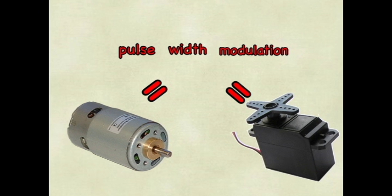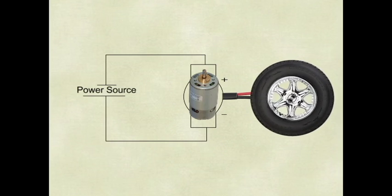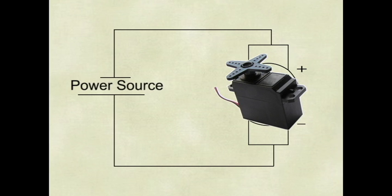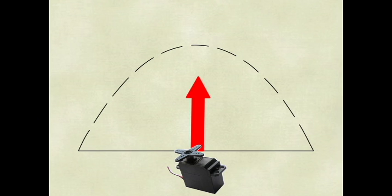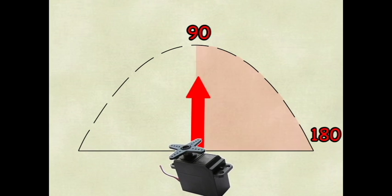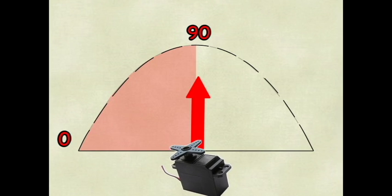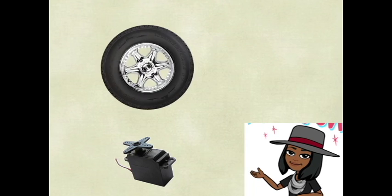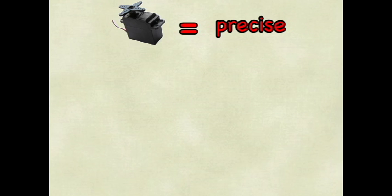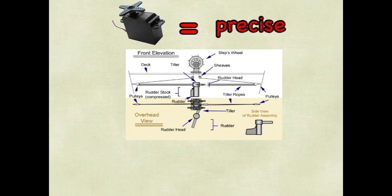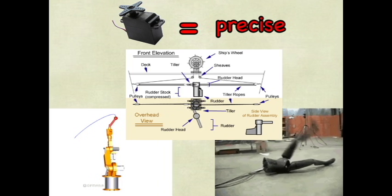Servos use the pulse width modulation technique too, but it's used differently. In a DC motor, pulse width modulation determines speed, but in a servo, pulse width modulation determines which way the shaft will rotate. For example, the center position for a servo is 90 degrees. A long pulse between 90 and 180 will make the servo turn clockwise. A short pulse between 90 and 0 will make the servo turn counterclockwise. In short, a servo motor wouldn't work well for the wheels of a free-roaming robot — it would work better controlling specific tasks such as controlling a rudder on a boat or moving an arm or leg on a robot within a certain range.